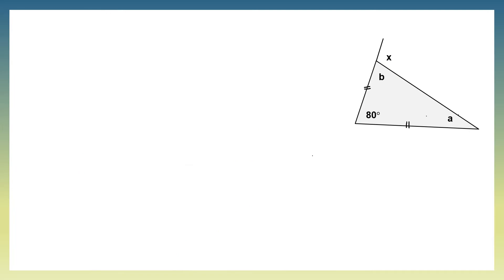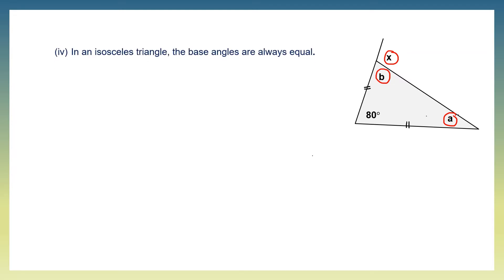Question 4. Here we have unknown angles a, b, and x that we need to find. Using the property that in an isosceles triangle the base angles are always equal, the base angles are angle a and angle b. So angle a is equal to angle b.